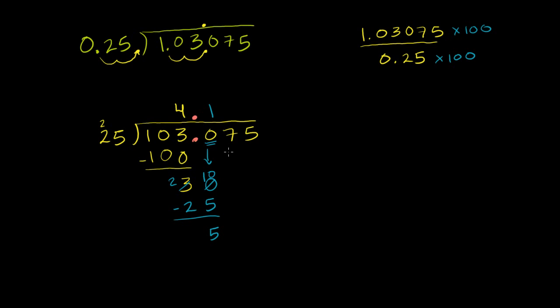Now we can bring down this 7. 25 goes into 57 two times. 25 times 2 is 50. 25 goes into 57 two times. 2 times 25 is 50. And now we subtract again. 57 minus 50 is 7.